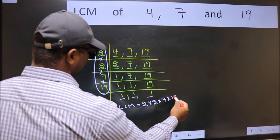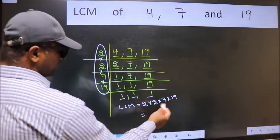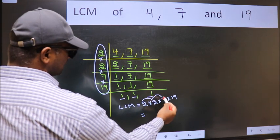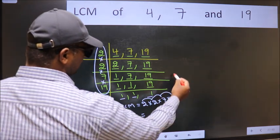Let us multiply these numbers: 2 into 2 is 4, into 7 is 28, into 19.